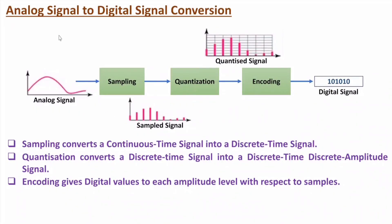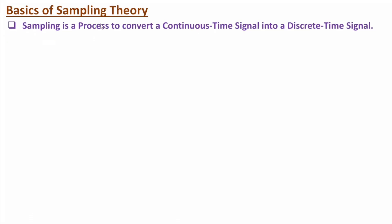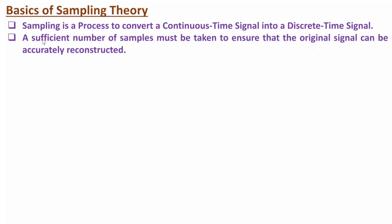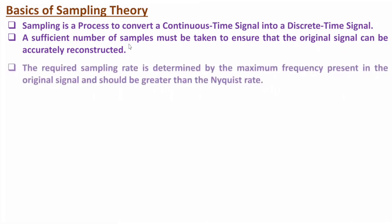Now I will discuss the basics of sampling. Sampling is a process to convert a continuous time signal into a discrete time signal. We need to take a sufficient number of samples, because when you want to reconstruct the signal from the sampled signal, there must be sufficient samples — otherwise one cannot extract the original signal. To understand what is sufficient, you need to understand the Nyquist rate.